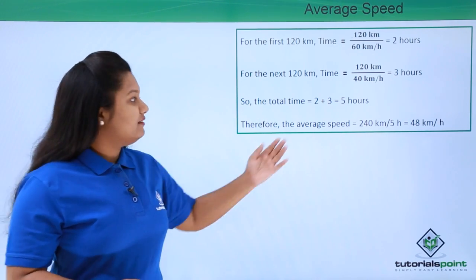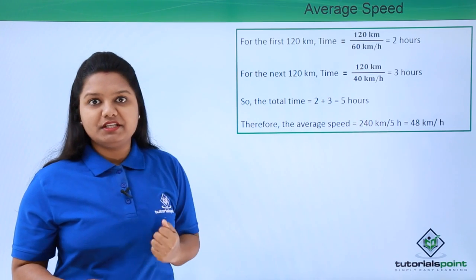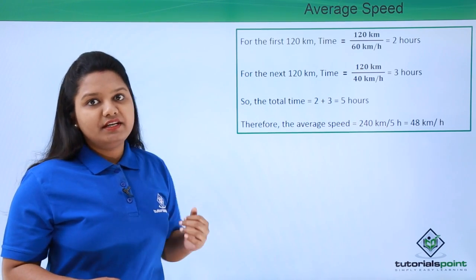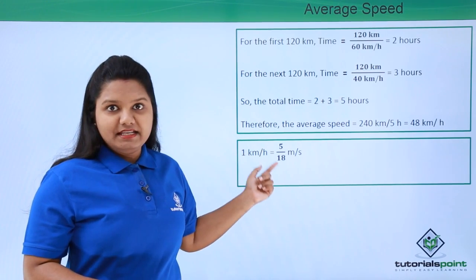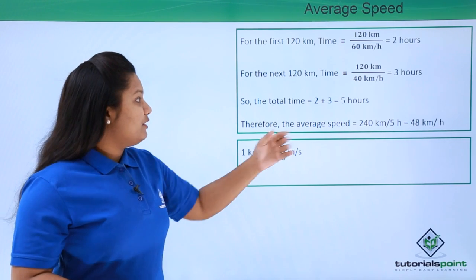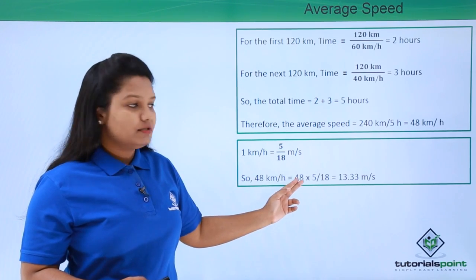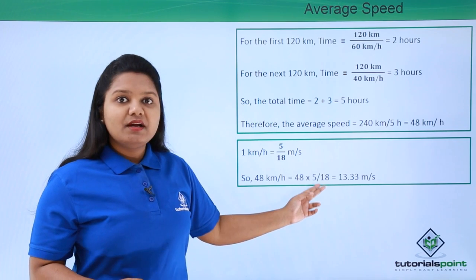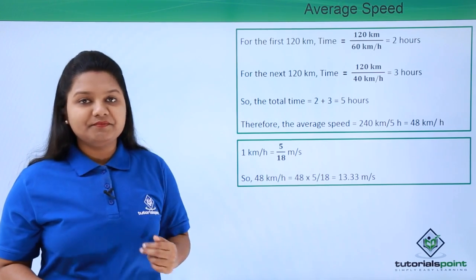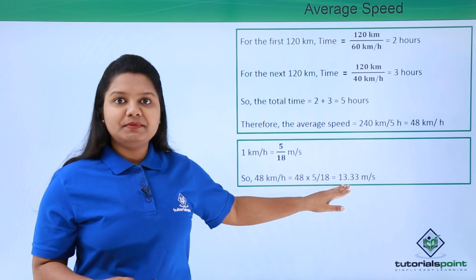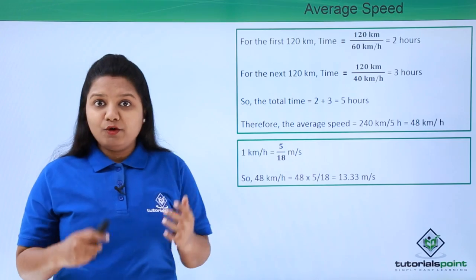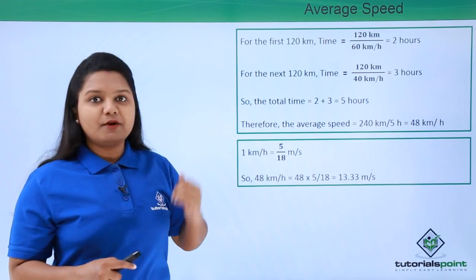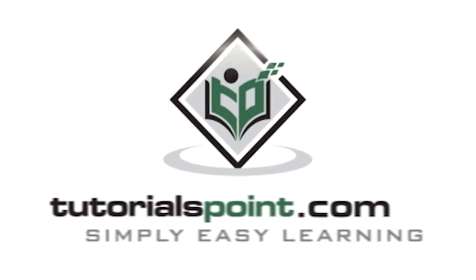Since the speed we found is in kilometers per hour, let's convert it to meters per second. We know that 1 kilometer per hour equals 5/18 meters per second. Therefore, 48 kilometers per hour equals 48 multiplied by 5/18, which is 13.33 meters per second. This is the average speed of Joe throughout the trip. Thanks for watching TutorialsPoint — Simply Easy Learning.